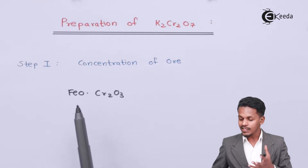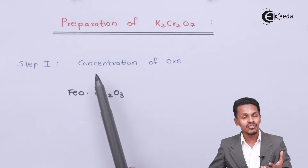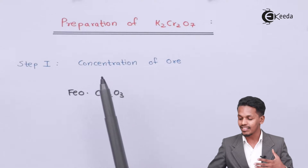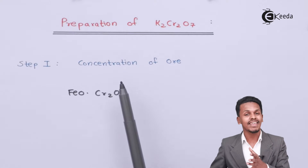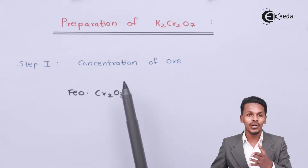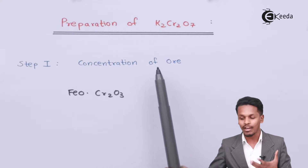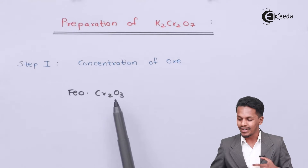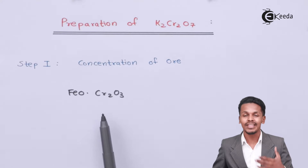This ore needs to be purified, so we crush it and pass it through the hydraulic classifier. In this process we can separate out the ore from the gangue or impurities. This process is known as concentration of ore, and from this we obtain FeOCr₂O₃.